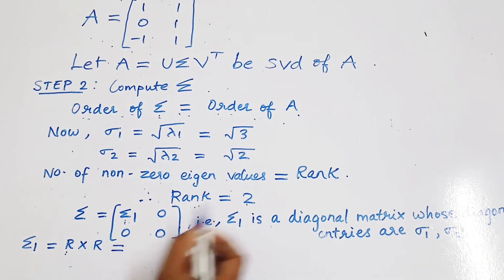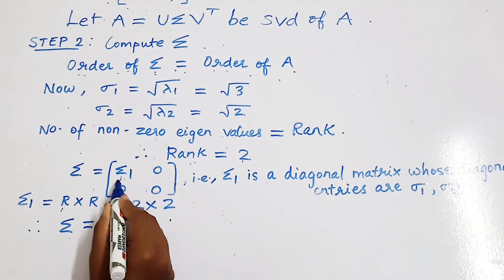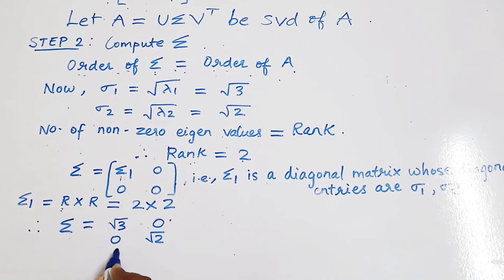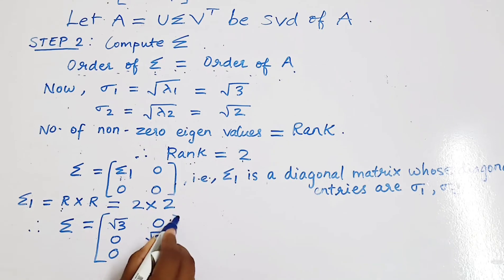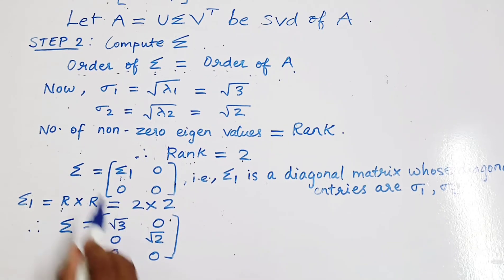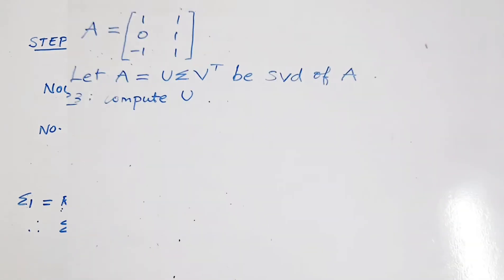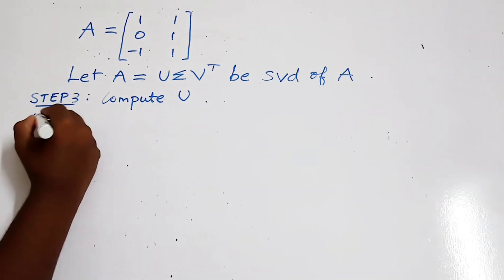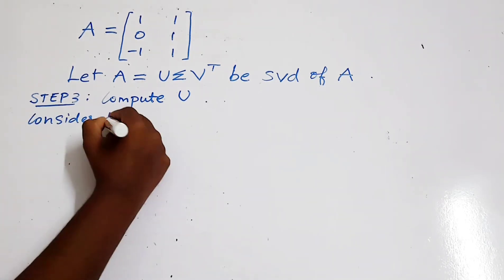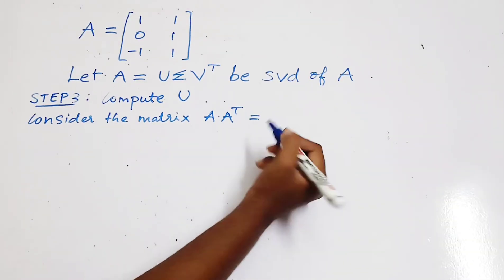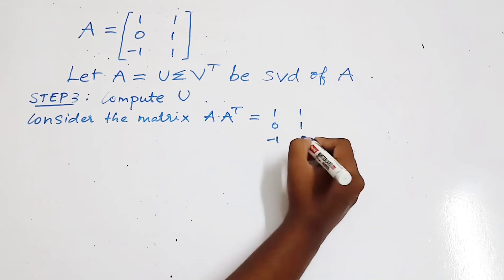The rank is 2, so the diagonal block sigma 1 is 2 cross 2. Sigma is a diagonal matrix whose diagonal entries are sigma 1 and sigma 2, giving root 3, 0; 0, root 2. A zero row is added as a third row because the order of sigma must equal the order of A. This is the sigma matrix. Step 3 is computation of matrix U. For finding matrix U, consider the matrix A times A transpose.